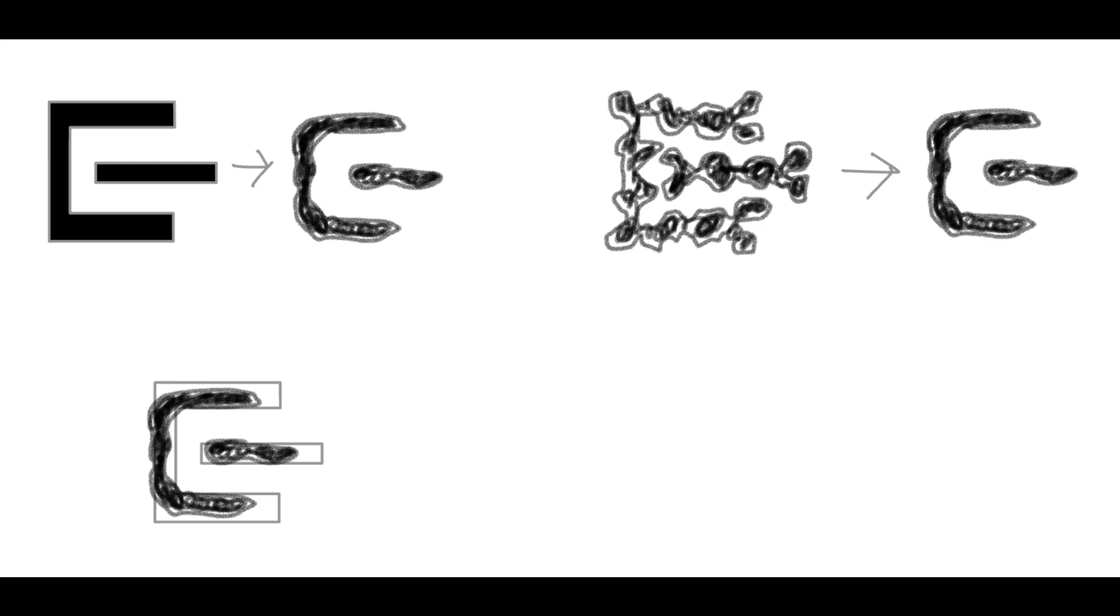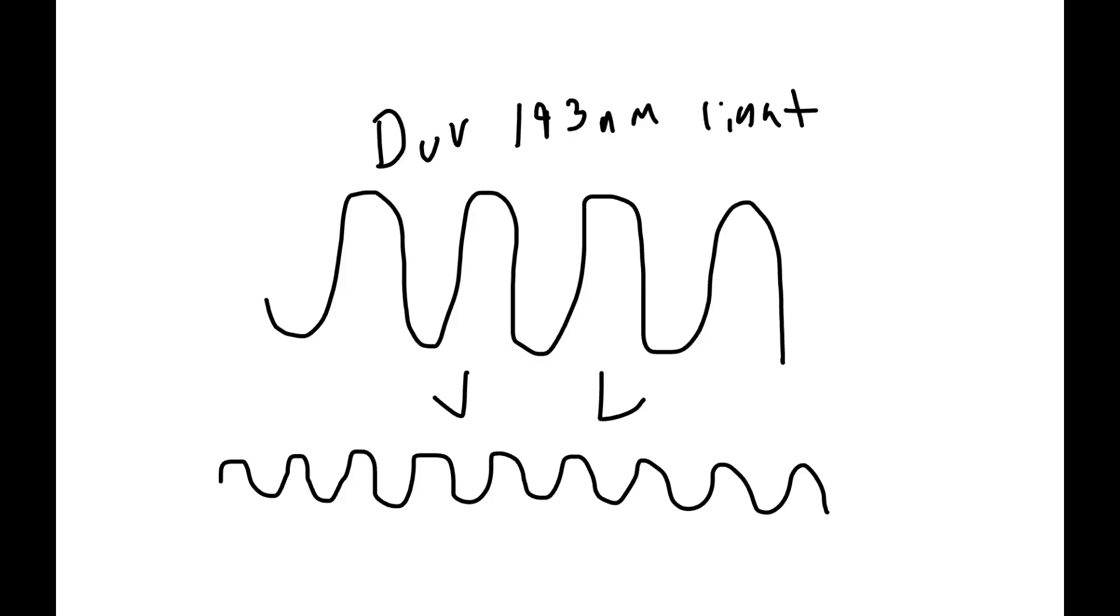Recently, however, we have started to run into a problem. We have gotten so small that the wavelength of the light we are using to etch the silicon semiconductors is the limiting factor.